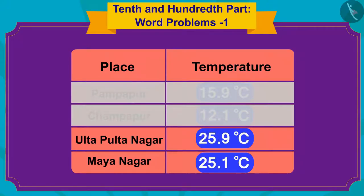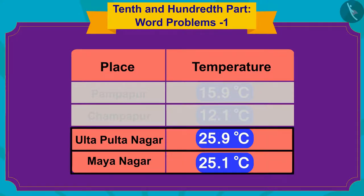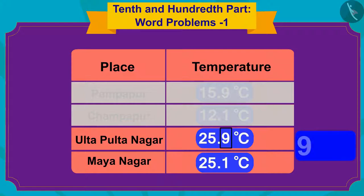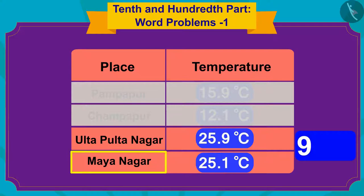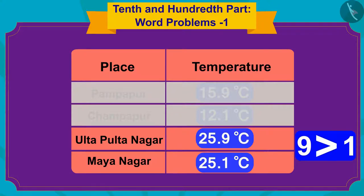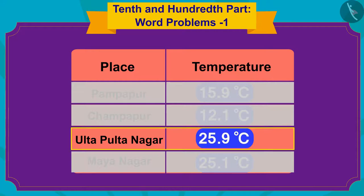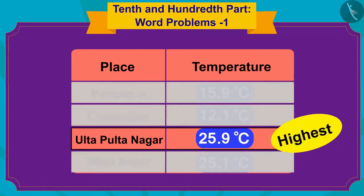Therefore, we will now compare the numbers written in the 10th places after the decimal point in the temperatures of these two places. The number in the 10th place in the temperature of Ulta Pulta Nagar is 9, and that in the 10th place of the temperature of Maya Nagar is 1. Since 9 is more than 1, we can say that the temperature of Ulta Pulta Nagar is the highest among all these places.